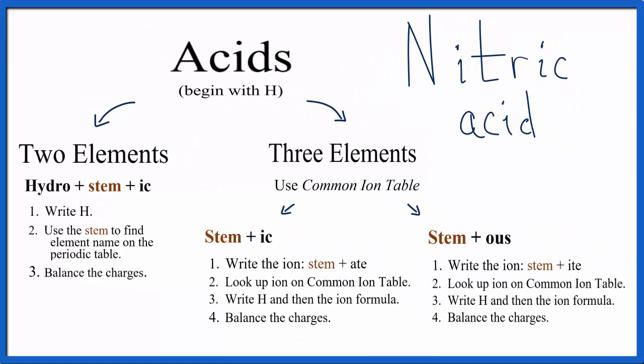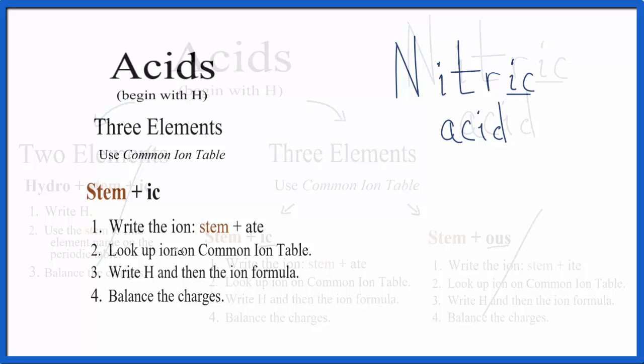Let's write the formula for the not so friendly nitric acid. We can see nitric acid does not begin with hydro, so this set of rules right here don't apply. We can see it does end in ic and we have ic right here, not ous. So these are the rules we'll use to name nitric acid.